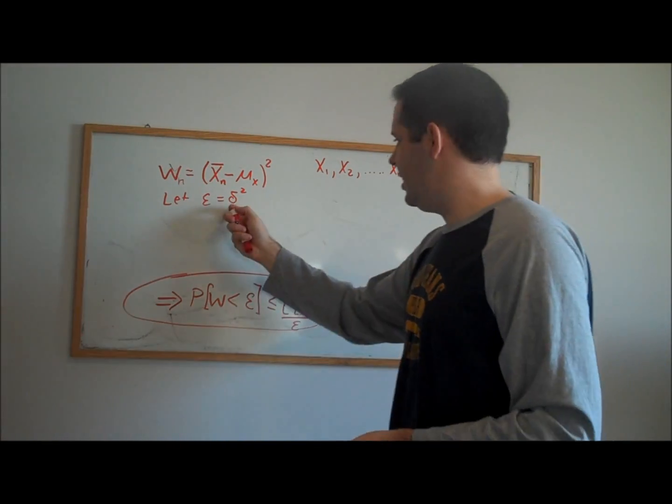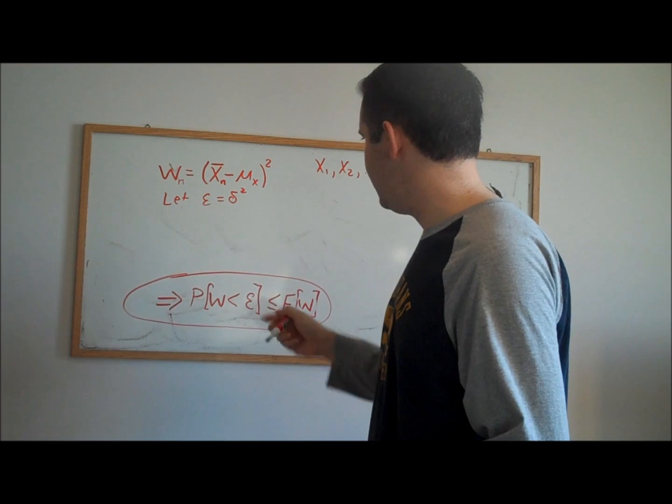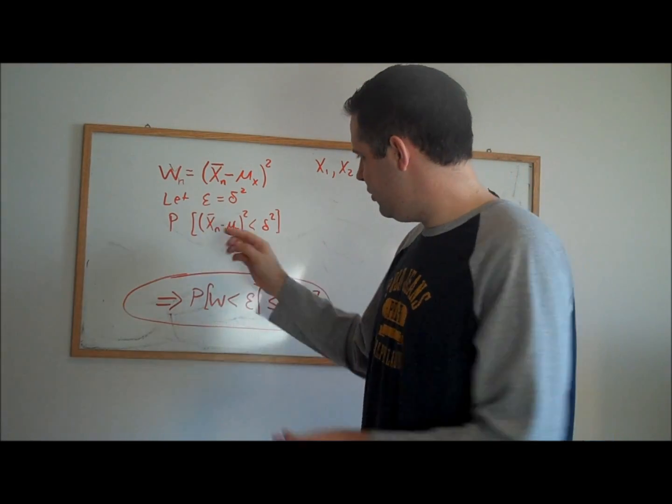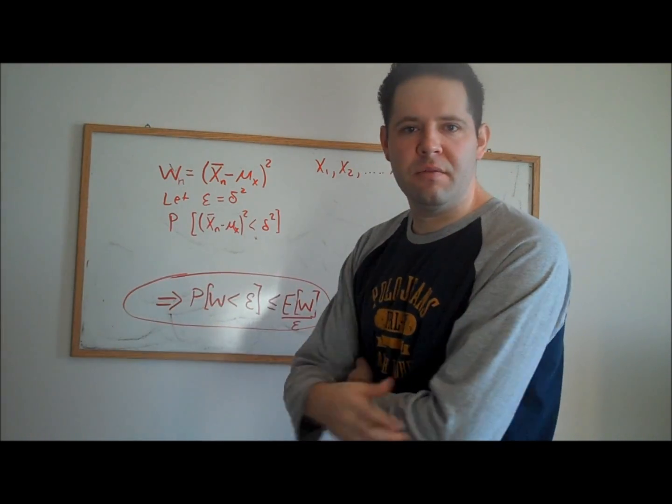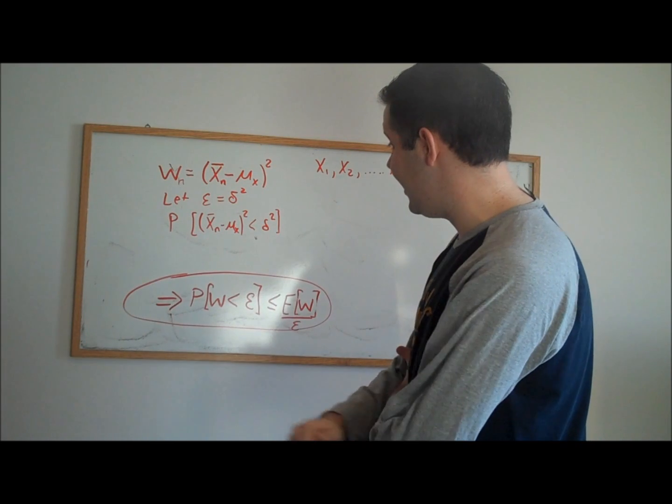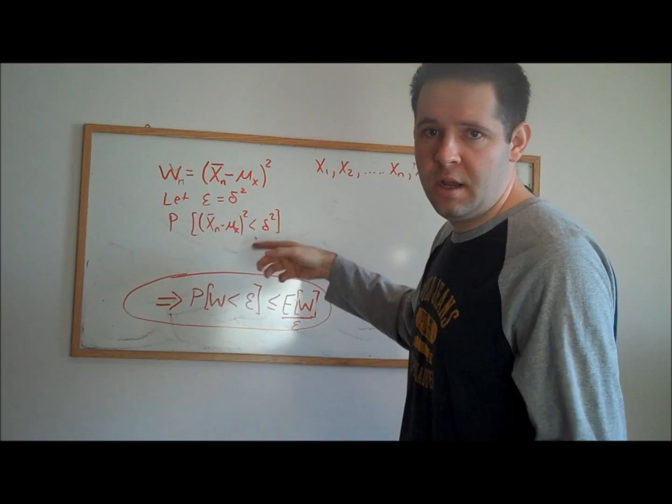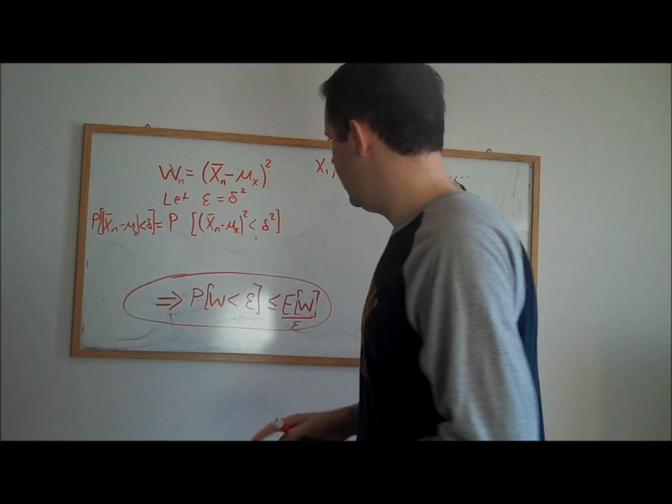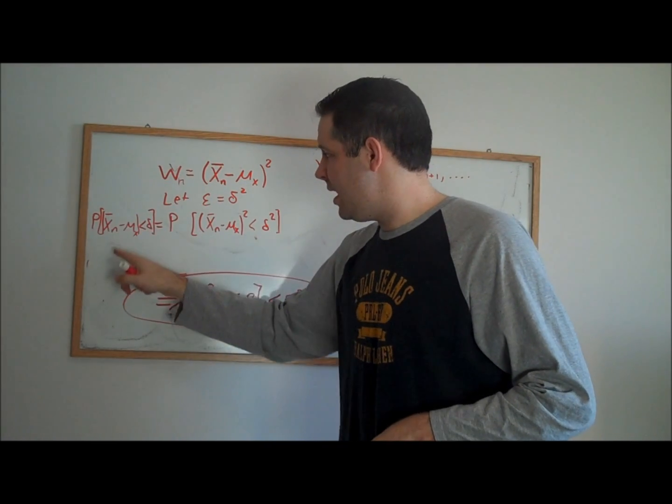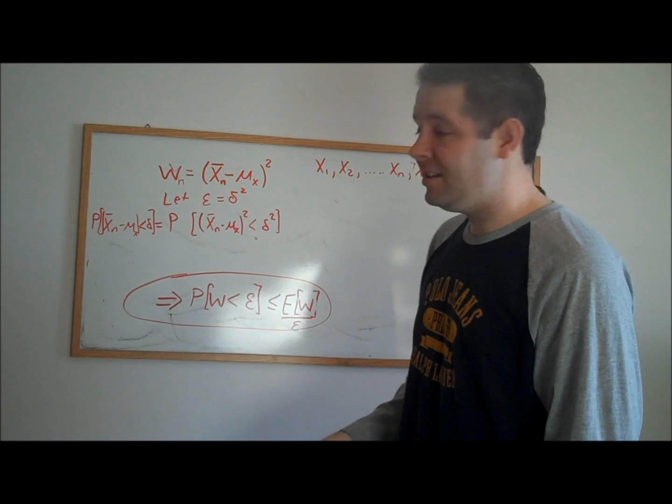Now I'm also going to let epsilon equal delta squared. We can write out the probability statement that w n is less than delta squared. One thing we can do is do algebra inside of the probability statement, and so we can take the square root of both sides here, and that's not going to change anything. So really this probability statement here is the same thing as the absolute value of the random variable x bar n minus mu is less than delta.